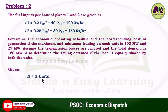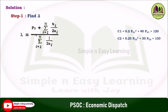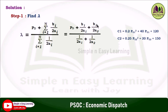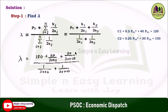Here there are two units, so n equal to 2, and the demand is 180 megawatt, and the limits for both units are 25 to 100 megawatt. Step 1: find lambda using this formula, substituting n equal to 2. The formula is expanded as: PD plus B1 by 2A1 plus B2 by 2A2, divided by 1 by 2A1 plus 1 by 2A2. The coefficient of PG1 square is A1 and coefficient of PG1 is B1. Substituting values — demand is 180, B1 is 40, A1 is 0.2, B2 is 30, A2 is 0.25 — we get lambda equal to 75.556.